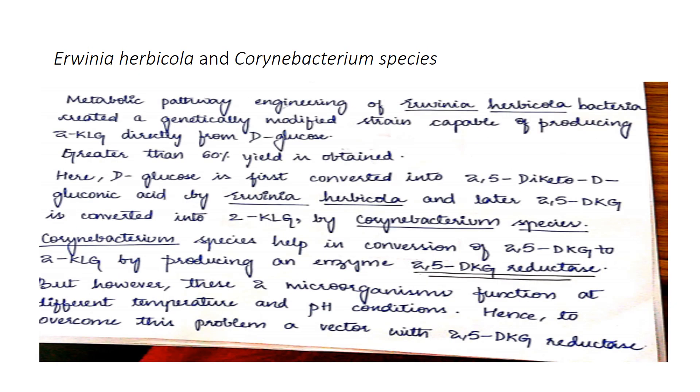Metabolic engineering includes these two organisms and yield is also high, almost 60 percent. We are exploiting two organisms - Erwinia herbicola and Corynebacterium species. But the main drawback is both organisms require different temperature and different pH conditions.